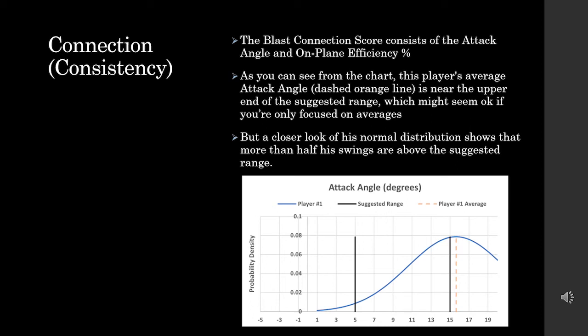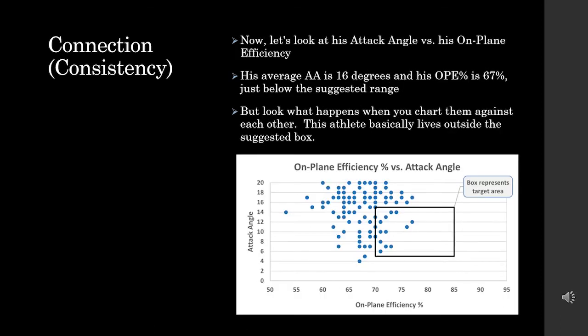Now we've charted his attack angle against his on-plane efficiency percentage. The black box represents the target area — Blast's recommendation for on-plane efficiency is between 70 and 85 percent, and our attack angle range is 5 to 15 degrees. You can quickly see how many swings are really outside this box. The attack angle tends to be a little bit high for more than half the swings, and obviously his on-plane efficiency is lower than it should be. So this athlete has a little bit of work to do.